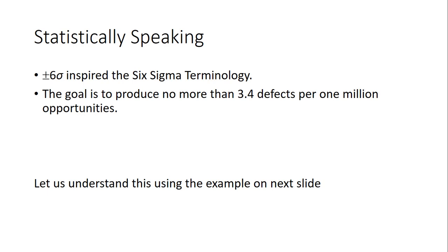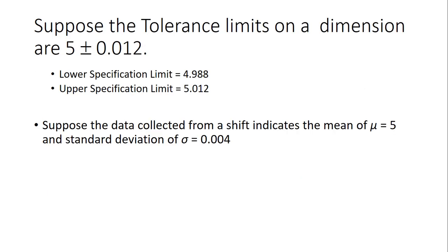In this video we will try to understand how we come up with the number 3.4 defects per one million opportunities. Let us understand this using an example. Let us assume a hypothetical process that produces a certain kind of product with a dimension of five plus or minus 0.012 inches. That means the lower specification limit is 4.988 and the upper specification limit is 5.012.